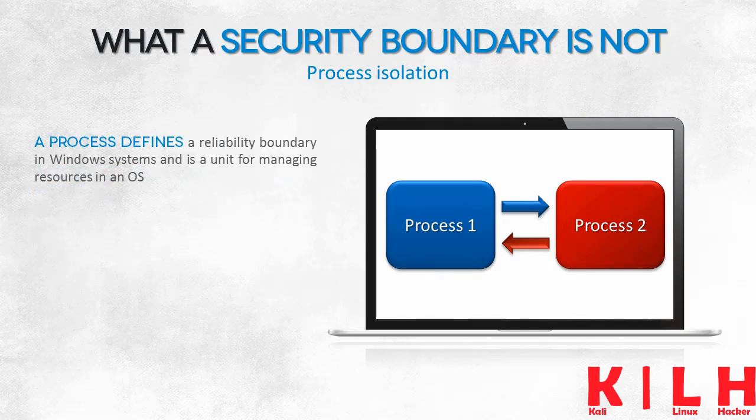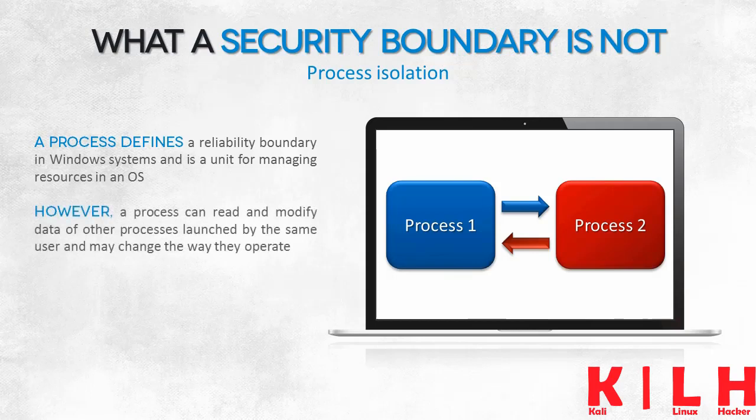Modern operating systems, including Windows, don't use a process to set a security boundary. A process defines a reliability boundary and is managed by an operating system — it allocates CPU and RAM to processes. This means that a single process can read and modify the data other processes work with in a way that is uncontrolled by the system. This occurs within a user session.